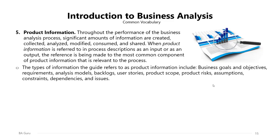The types of information the PMI PBA guide refers to as product information include business goals and objectives, requirements, analysis models, backlogs, user stories, product scope, risks, assumptions, constraints, dependencies, and issues. All these are examples of product information.